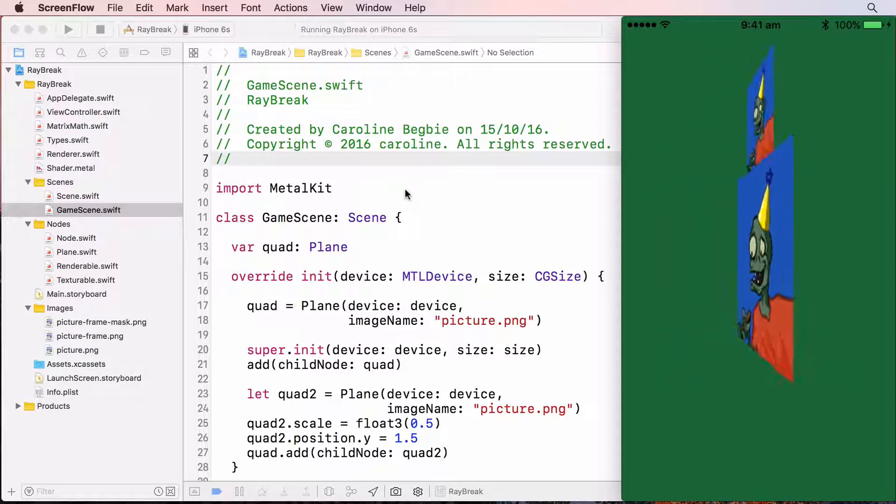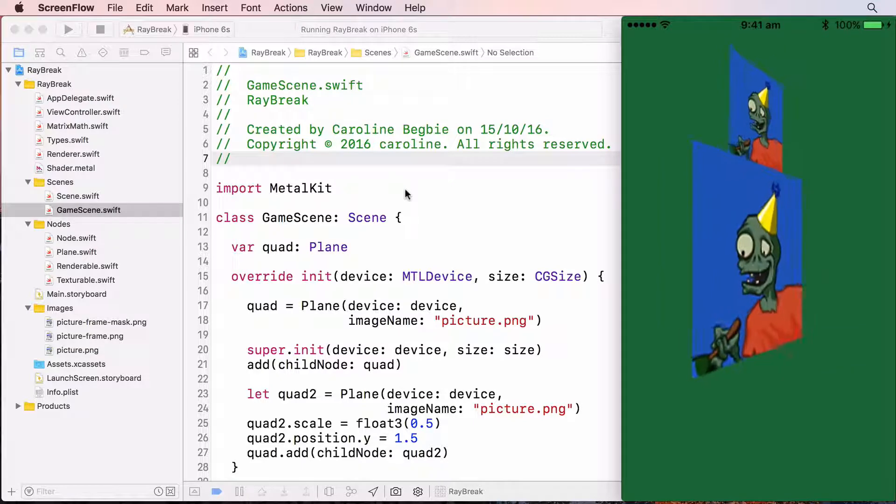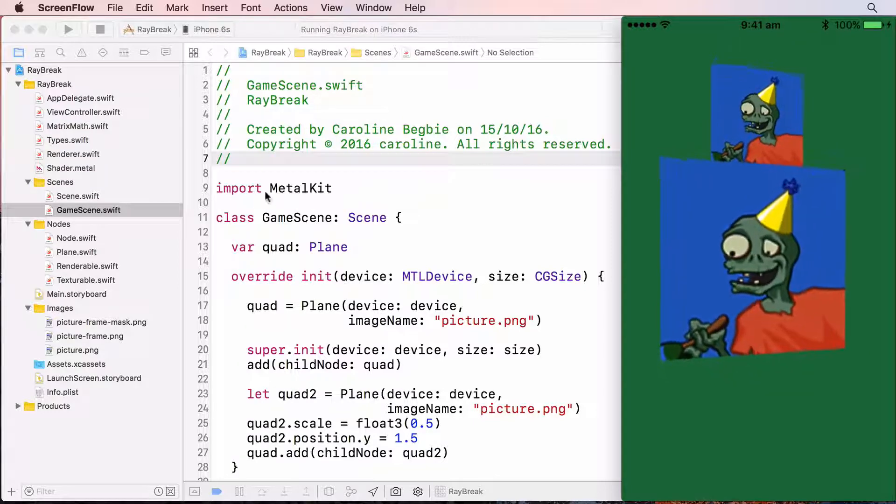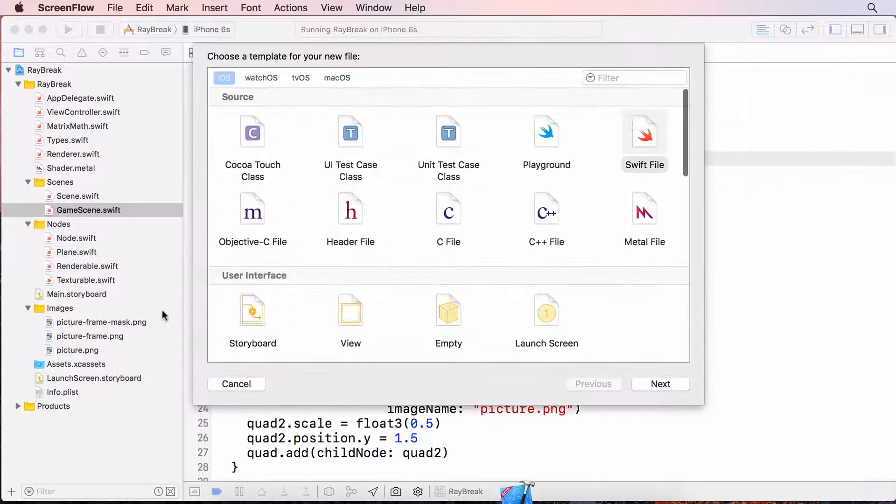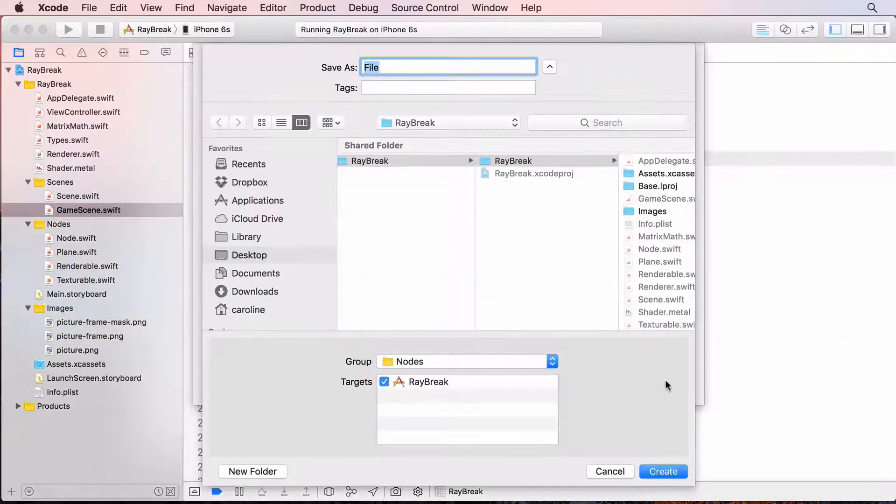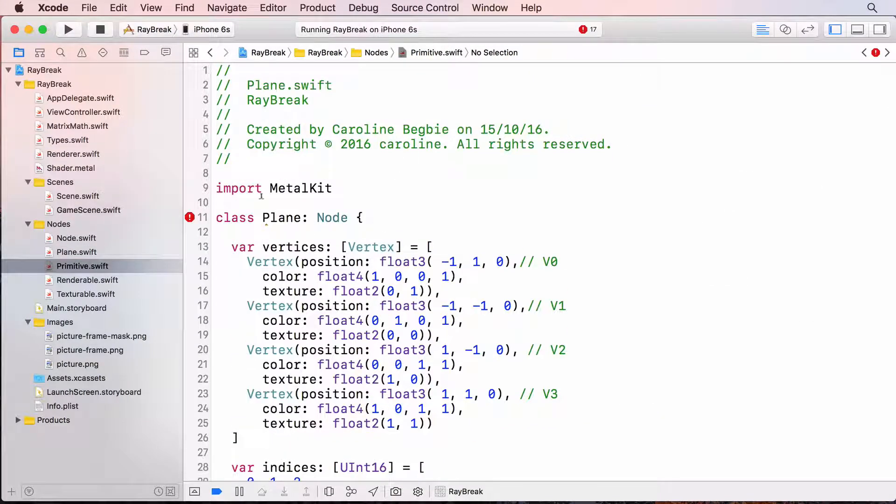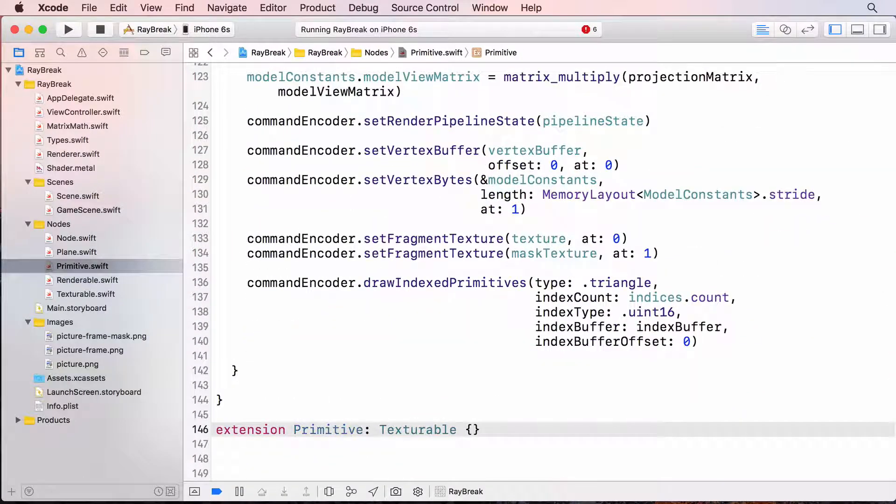So I'm going to rename the plane class to primitive and then I can subclass primitive with both a plane class and a cube class and the subclasses will just hold the vertices. So I'll create a primitive.swift file and copy the plane code into it. I'll change all the occurrences of plane to primitive and that's created a duplicate class.